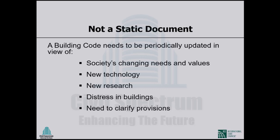There is also the need to clarify provisions. ACI 318 — the code for concrete design and construction — is a document I have been reading for decades. I still find clauses that seem ambiguous or not clear enough, and that leads to changes. We try to rewrite the language in the next edition to be clearer and better. So building codes cannot be static documents.